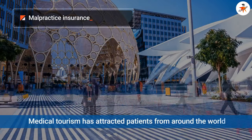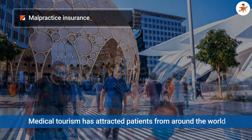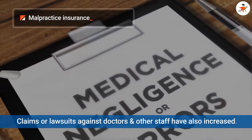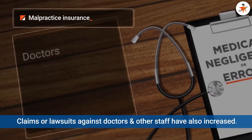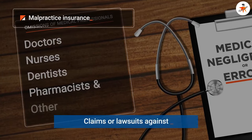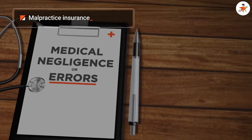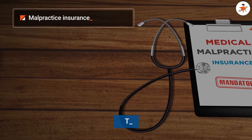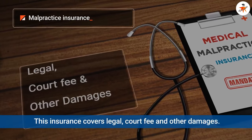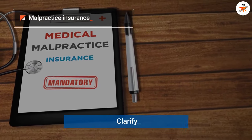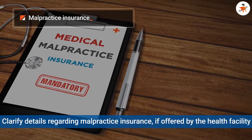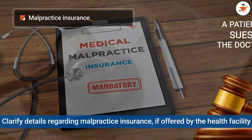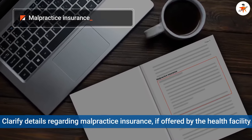Due to medical tourism in the UAE, more and more patients from around the world are attracted to this region, which has also increased the number of claims or lawsuits arising from acts of negligence, errors, or omissions of medical professionals such as doctors, nurses, dentists, pharmacists, and other allied health professionals. In most cases, especially for doctors, malpractice insurance is a mandatory requirement for medical professionals in the UAE. This insurance will cover the legal and court fees and damages awarded to the claimant in the event of a lawsuit. You must clarify from your employer if the health facility offers malpractice insurance and how it will cover you if a patient sues you — this should be clearly defined in your job contract, not left on mere discussion.